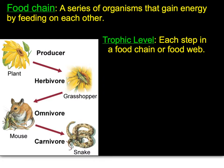Then we have different trophic levels: the first trophic level, second trophic level, and third trophic level — sometimes called the primary consumer, secondary consumer, and tertiary or third consumer. So the idea is the snake eats the mouse, which ate the grasshopper, which ultimately ate the producer.